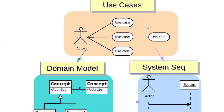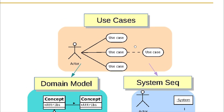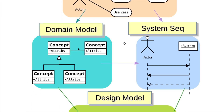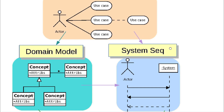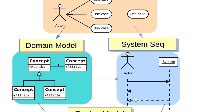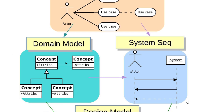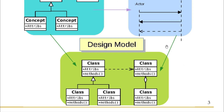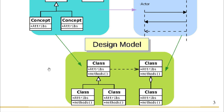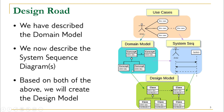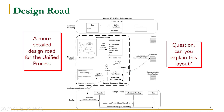Looking closely at the roadmap: we talked about use cases already, and with the help of use cases we created our domain model. The second thing to be created with the help of the domain model is the system sequence diagram. We are going to create the system sequence diagram by taking input from our use cases and the domain model previously created, and finally the system sequence diagram and domain model will be input for our design model, which includes our class diagram and other UML artifacts.